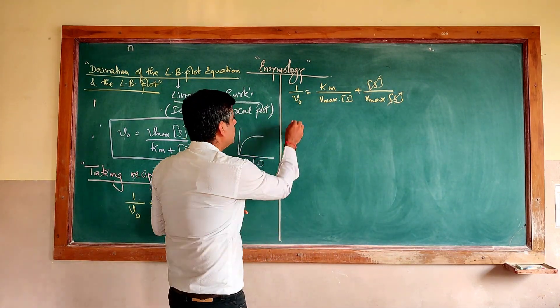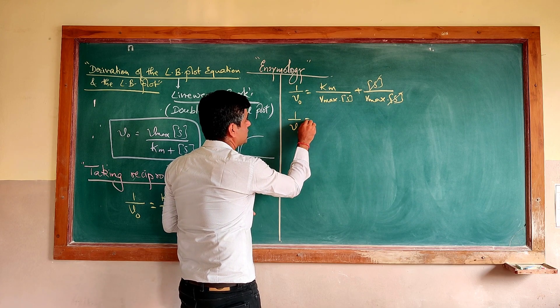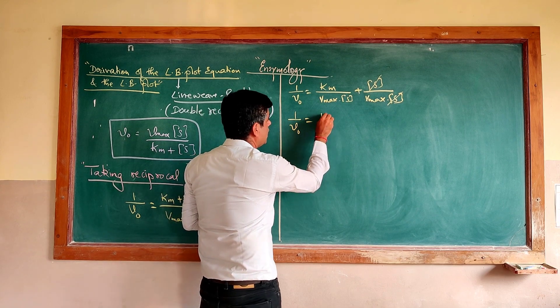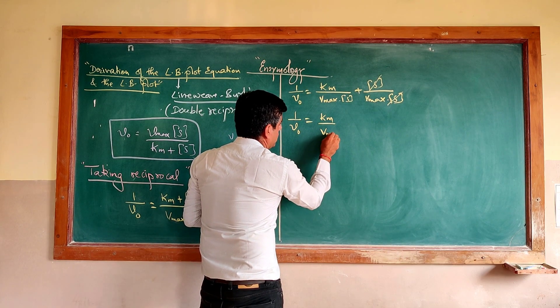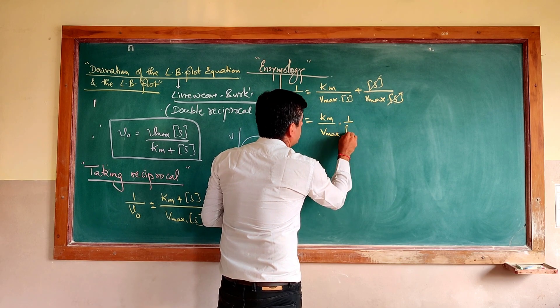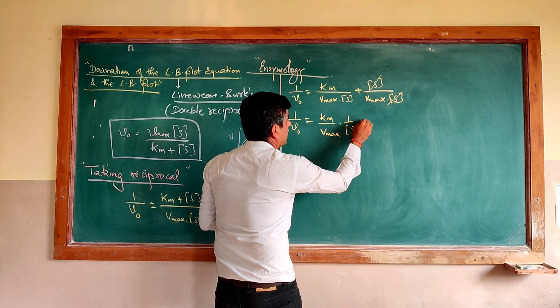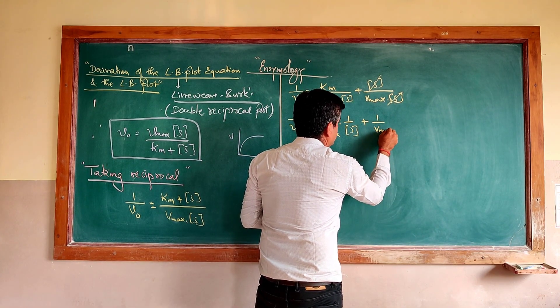After separating the numerator terms, you are left with the equation: 1/V₀ = (Km/Vmax) × (1/S) + 1/Vmax.